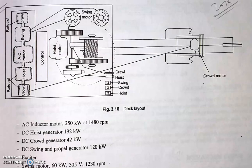The figure shows the deck layout of the electrical shovel. The principal power equipment is the motor generator set. The MG set is usually placed at the rear side of the machine and consists of an AC induction motor, swing generator, hoist generator, crowd generator, and exciter.